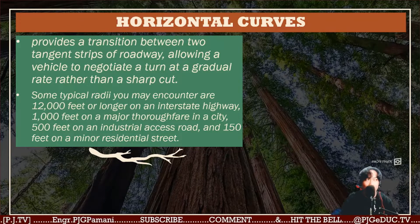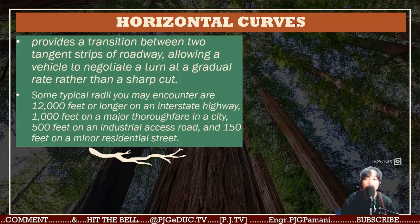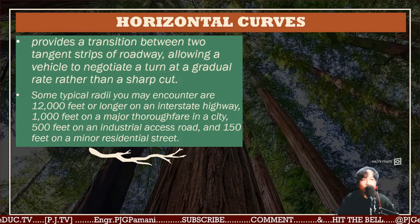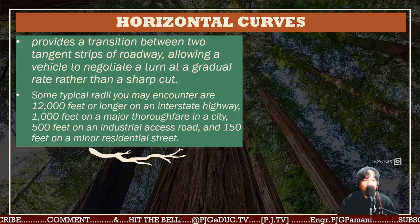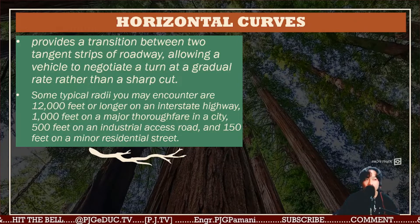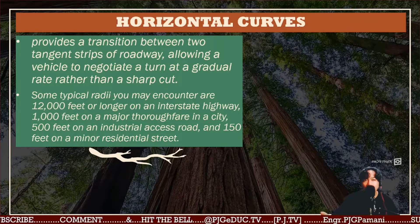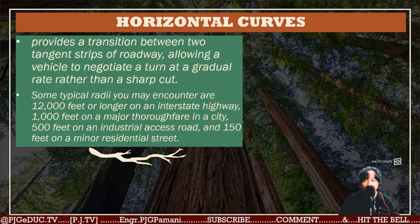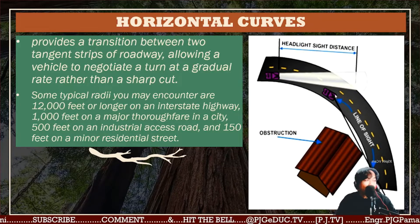Some typical radii you may encounter for horizontal curves: 12,000 feet or longer on an interstate highway, 1,000 feet on a major thoroughfare in a city, 500 feet on an industrial access road, or 150 feet on a minor residential street. These radii determine the degree of curve needed at a particular turn, and how fast we can assign the speed limit for that specific location.